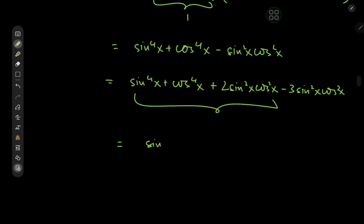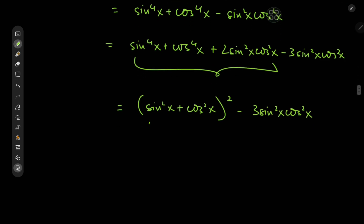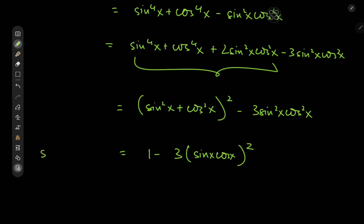Now we can complete the square: we have (sin²x + cos²x)² minus 3·sin²x·cos²x. Since sin²x + cos²x equals one, this simplifies to 1 minus 3·(sinx·cosx)². So that is what sin⁶x + cos⁶x evaluates to.